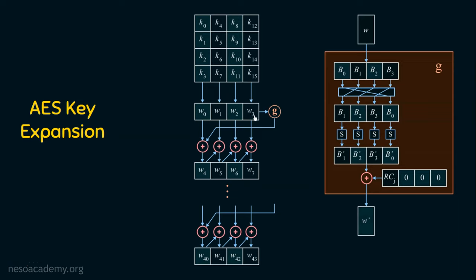For round 2, the G function takes W7 as input. The result is used to generate W8, so W8 = W4 XOR G(W7). This process continues to fulfill all the round key requirements of the AES operation.